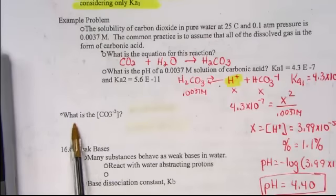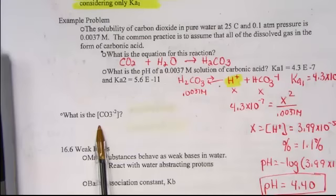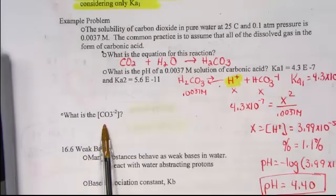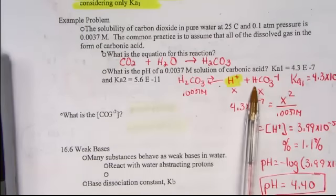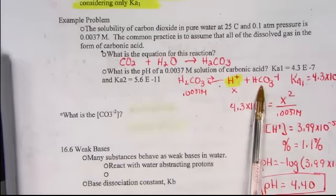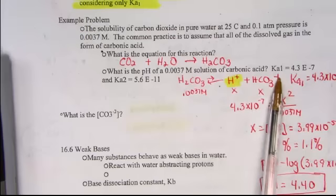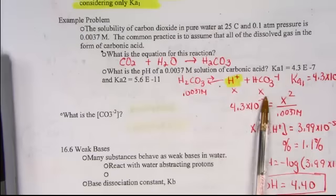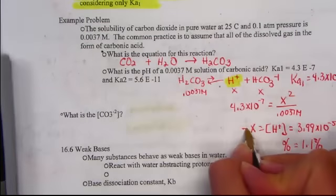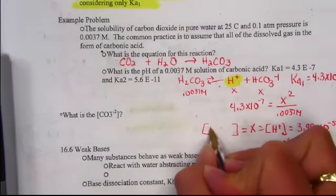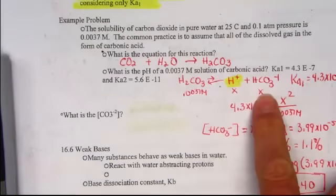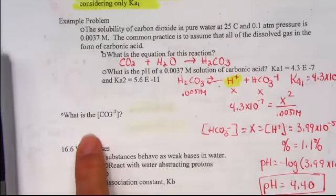There's a second part to our problem. Let's calculate the value of carbonate CO3 minus 2. The carbonate comes from the second removal of our proton from the bicarbonate ion. Now remember HCO3 negative 1 also had a value of X, so when we solved for X not only was it the hydrogen ion but it was the bicarbonate ion as well. Once we know the value of X it will become our starting point.